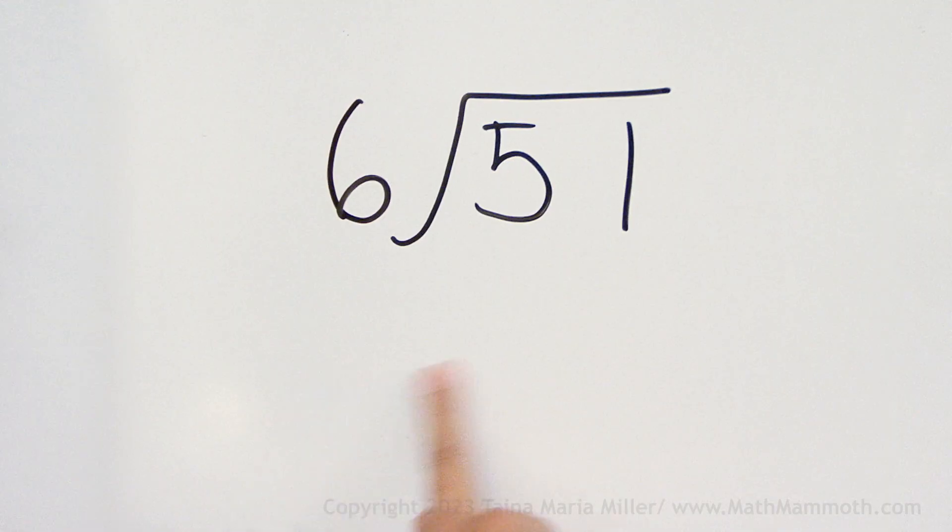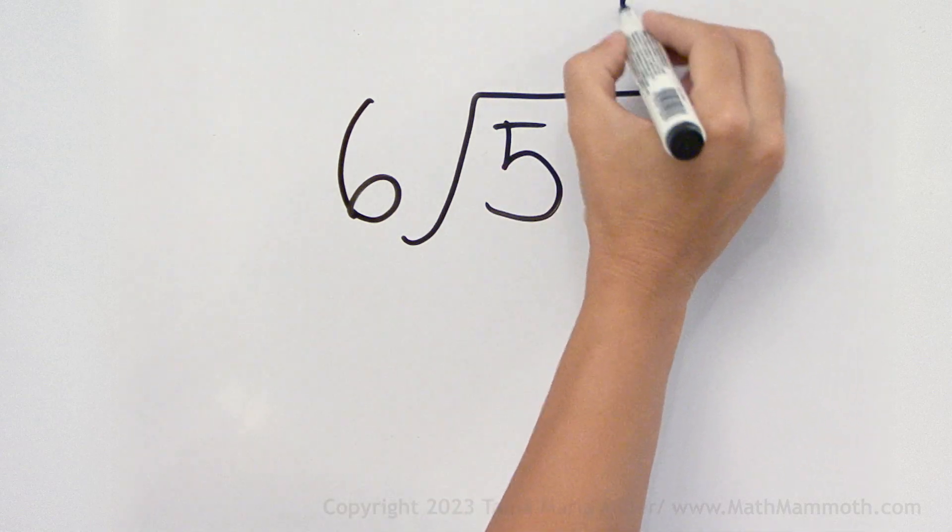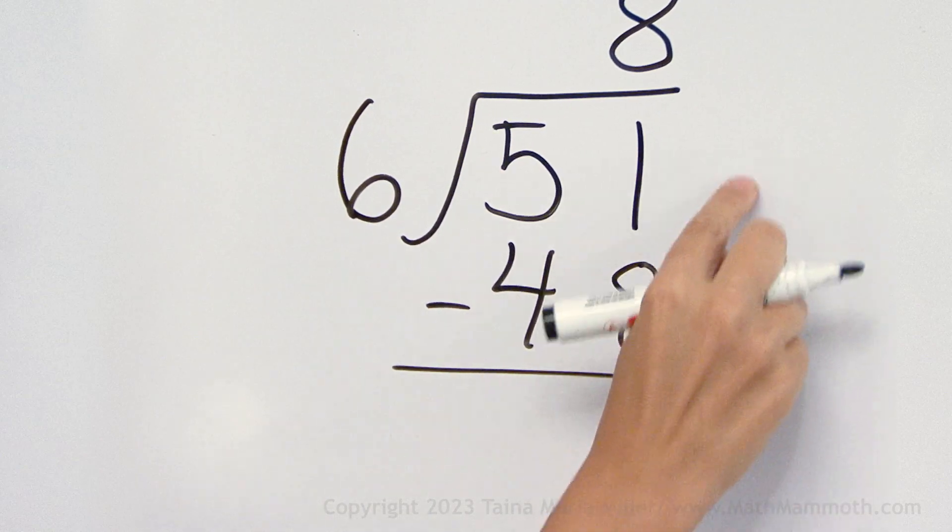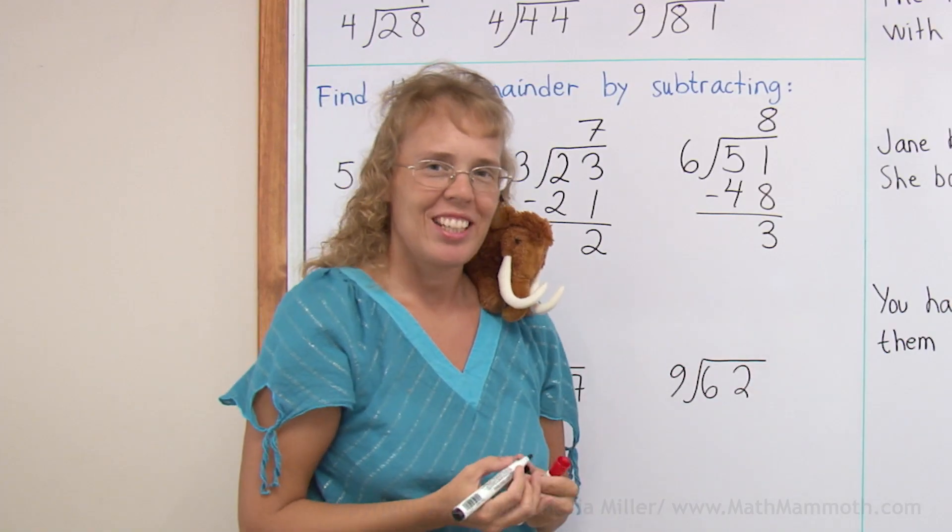How many 6's are in 51? 8. 8 times 6 is 48. And subtract to find the remainder 3. So that's pretty easy, right?